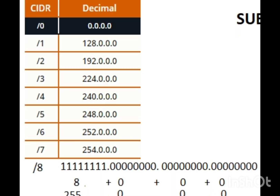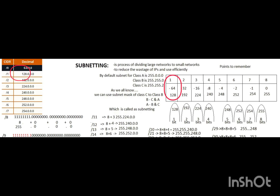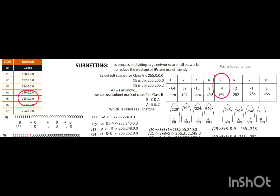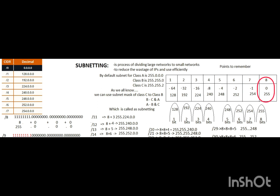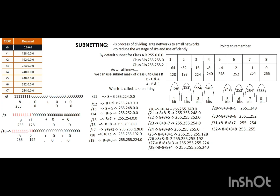The table summary: 1 bit = 128, 2 bits = 192, 3 bits = 224, 4 bits = 240, 5 bits = 248, 6 bits = 252, 7 bits = 254, 8 bits = 255. Subnetting is now clear. Thanks for watching this video. Next video coming soon — thanks and bye.